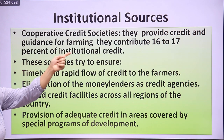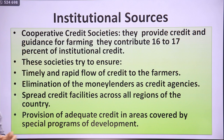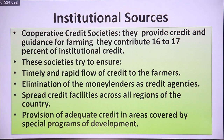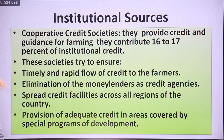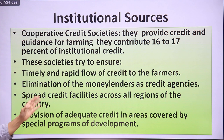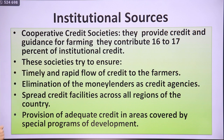Cooperative credit societies provide credit guidance for farming and contribute 16–17% of institutional credit. These societies ensure timely and rapid flow of credit to farmers. They have largely eliminated the role of money lenders, who were notorious for charging exorbitant rates of interest, making it very painful for farmers to repay loans. Cooperative credit societies have eradicated the prominence of money lenders and spread credit facilities across all regions of the country, including areas covered by special development programs.